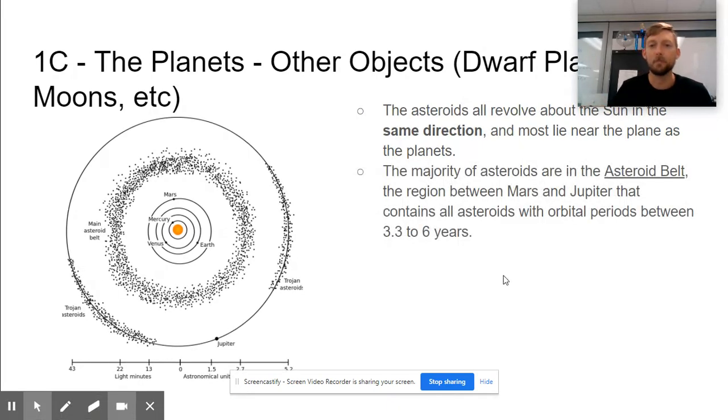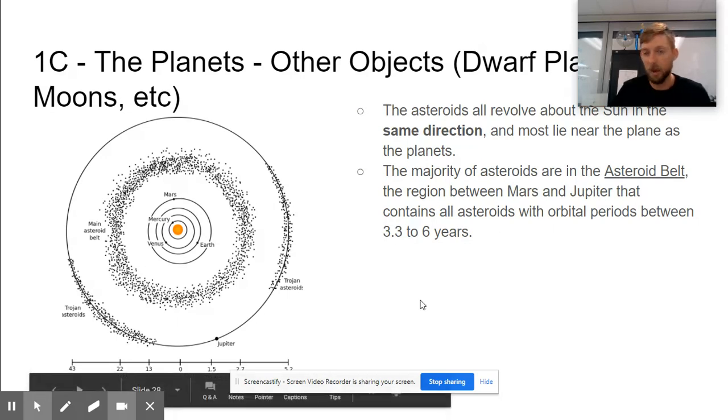Most of these asteroids are in the asteroid belt. It is between Mars and Jupiter and takes 3.3 to six years for the asteroids in this belt to orbit around the sun.